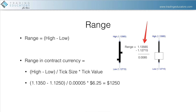You may also want to know how much that range is in your currency. For a US dollar account trading the Eurofuture, if the high is 130.50 and the low is 112.50, your range is 100 ticks. You take those 100 ticks and divide by the tick size of the contract — in the Eurofuture that's 0.00005, and in the e-mini S&P it would be 0.25. Then multiply by the tick value of the contract, in this case $6.25, and you get $1,250.